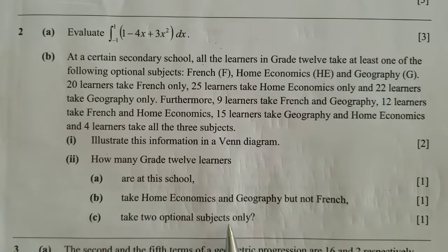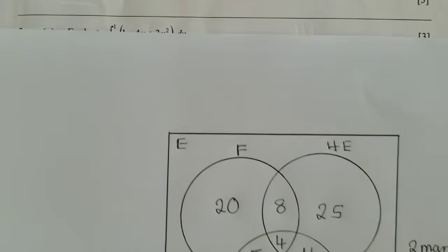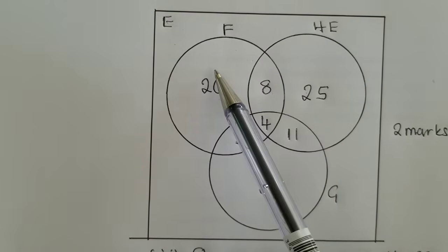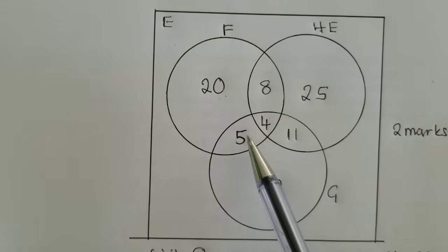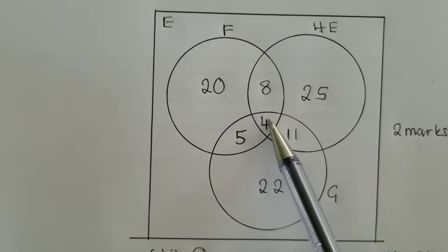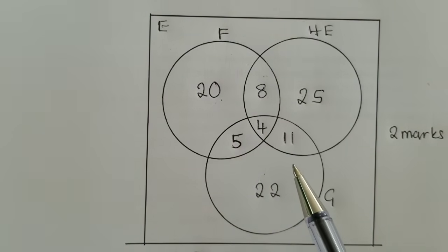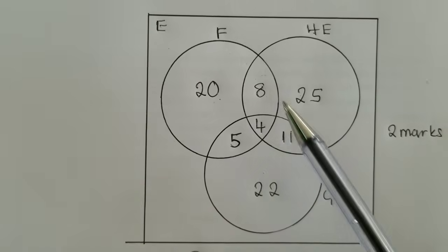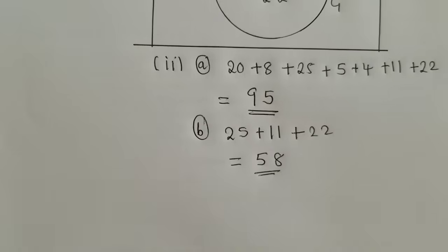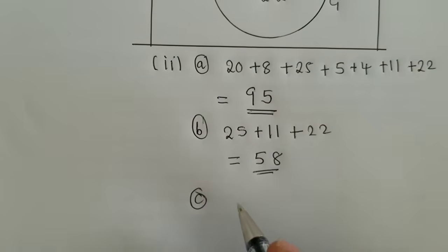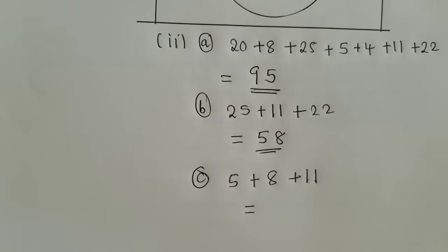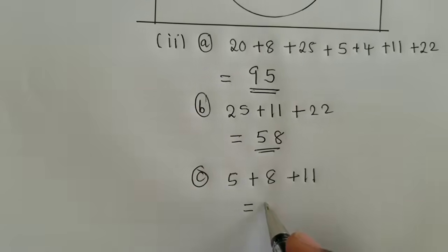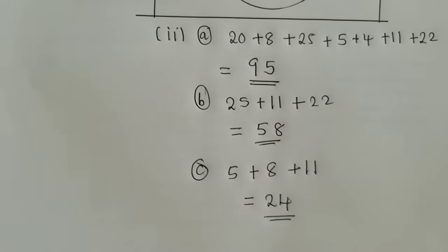We go to the last question. The last question they are saying how many grade 12 learners take two optional subjects only. Two optional subjects. You check the regions. This region it's one option, this one one option, this one one option, this it's two option, this two options, this two options, and this one it's three options. So since they're saying it's two optional subjects, it will be this region plus this region plus this region. That would be 5 plus 8 plus 11. And what are we getting? 5 plus 8 plus 11 is giving us a 24. So this is a 24.